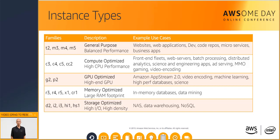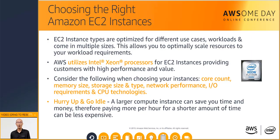Instance types include compute-optimized for science and engineering apps, or GPU-optimized for machine learning. AWS is constantly innovating and pushing out new instance types and newer versions of existing ones so that customers benefit from the latest technologies available from our technology partner Intel. All EC2 instances are powered by Intel Xeon processors, and by using Amazon EC2, you have quicker access to the various Intel compute innovations at the click of a button.